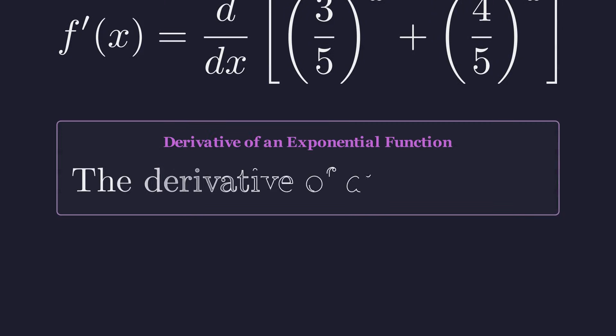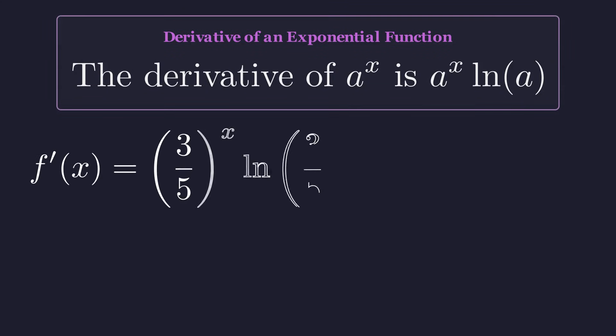For this, we use the exponential rule. The derivative of a to the x is a to the x times the natural logarithm of a. Applying this rule to both terms gives us f prime of x.